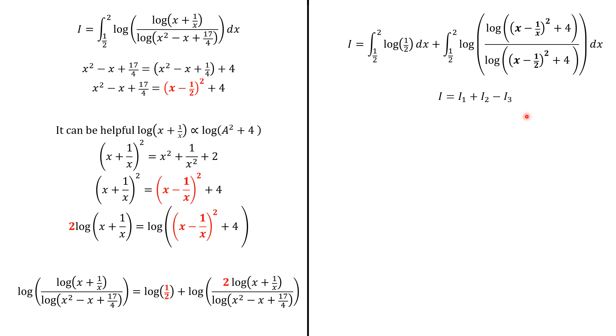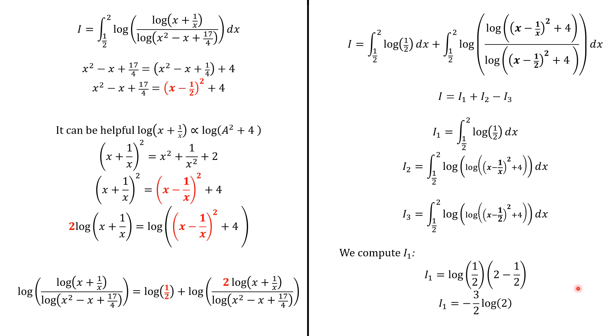And we have 2 times log of x plus 1 over x is of the form log of a square plus 4. Actually, a equals x minus 1 over x. So the integrand we write as follows. So we have that 2 here. And it is balanced with log of 1 over 2. So I rewrite as follows. So I can be split in three parts. I1 plus I2 minus I3.